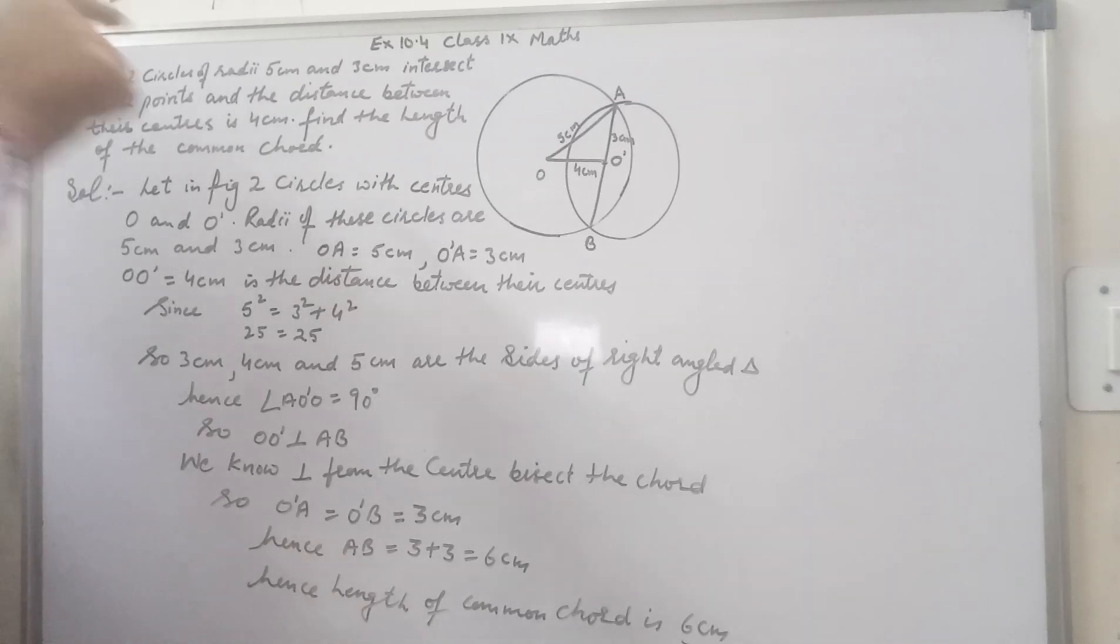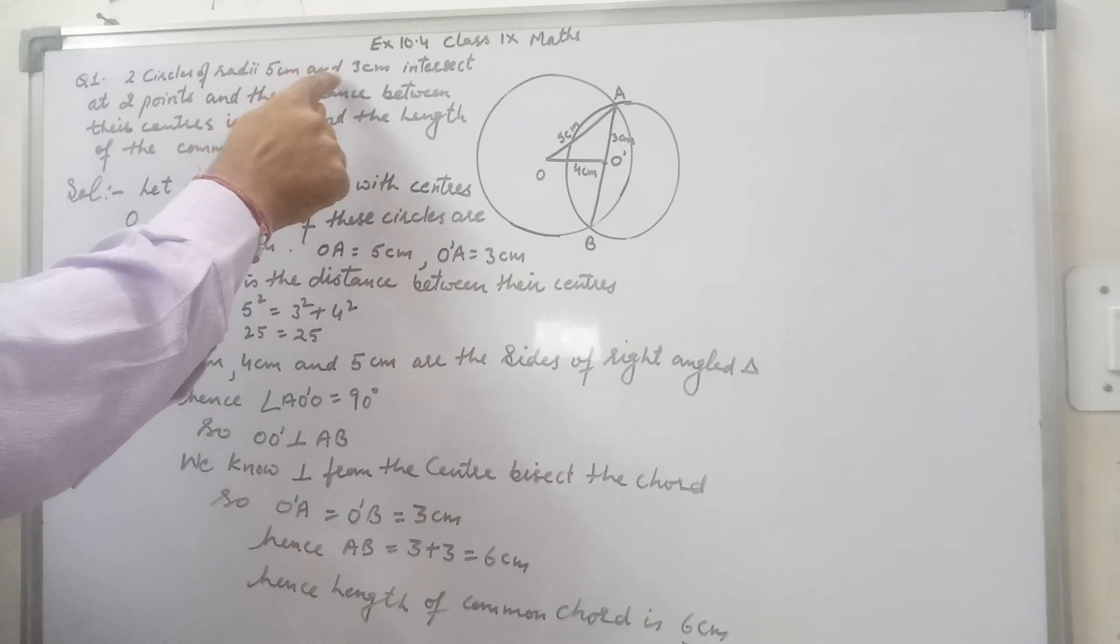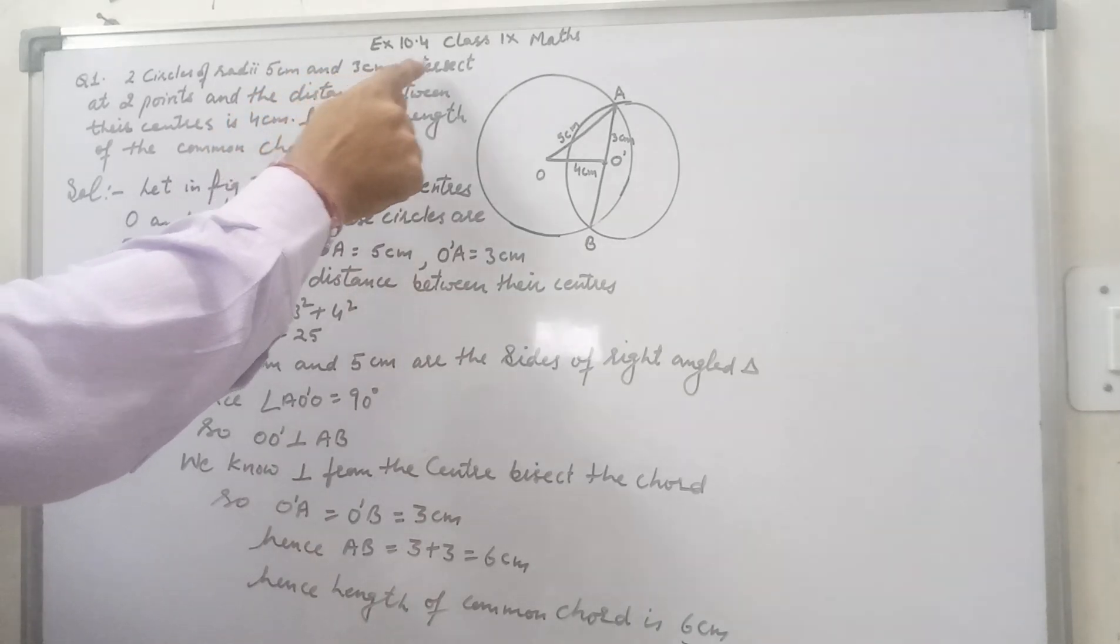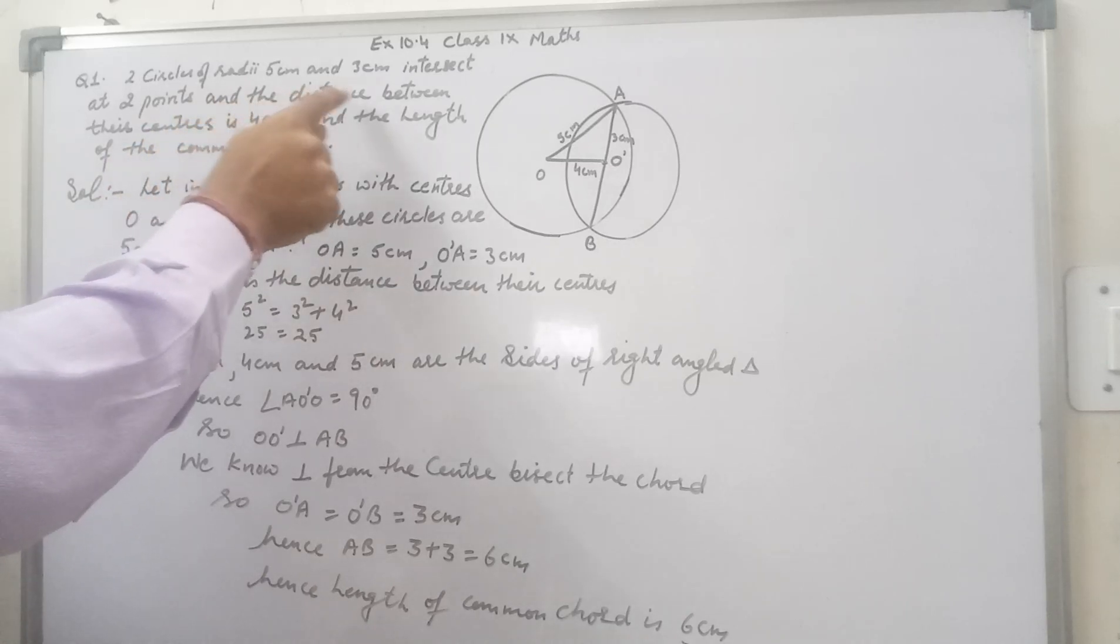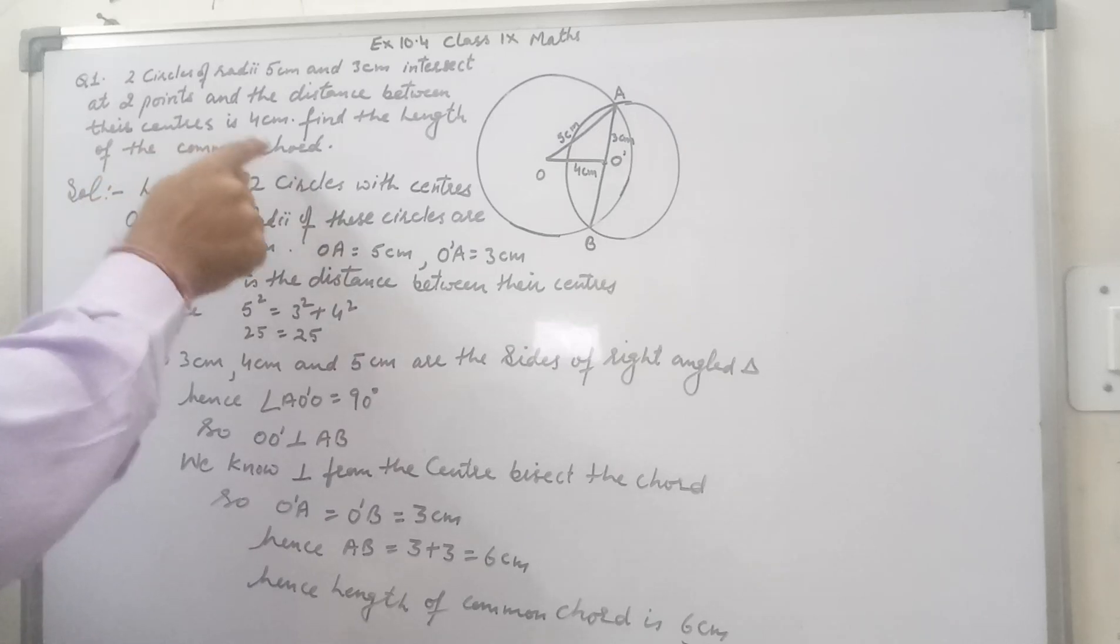Two circles of radii 5 cm and 3 cm intersect at two points and the distance between their centers is 4 cm. Find the length of the common chord.